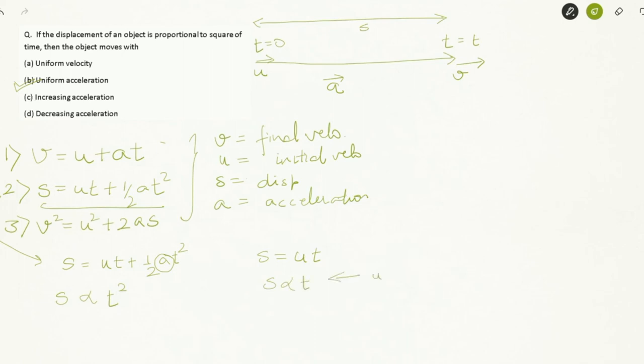This is the case of uniform velocity. So through the entire journey the body is moving with uniform velocity U.